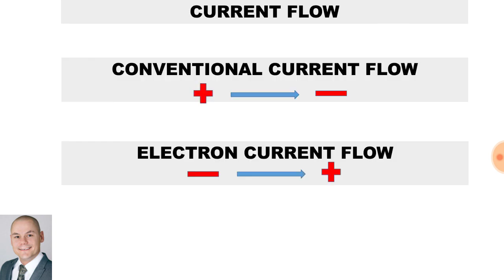If we look at a circuit diagram, we would see that the conventional current flow would flow from the positive terminal to the negative terminal. However, the electron current flow is from the negative terminal to the positive terminal.